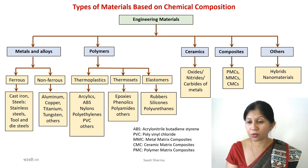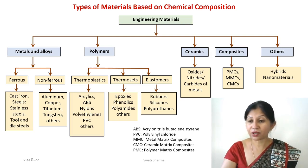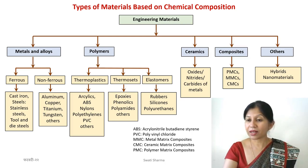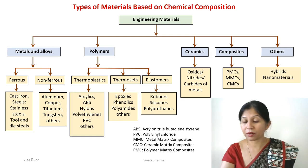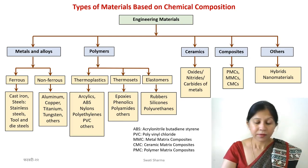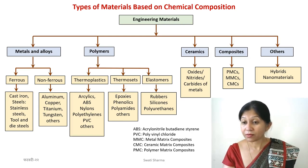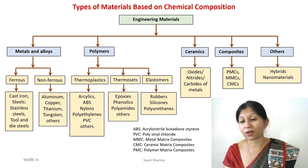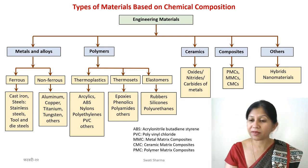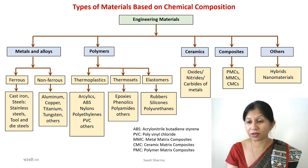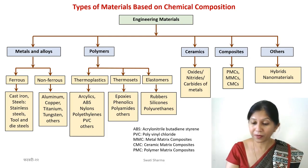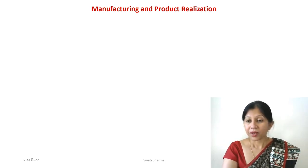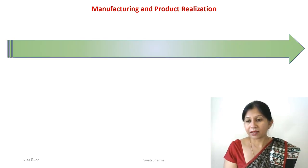Our primary focus in this course is manufacturing, so while I've given examples of hybrids and composites to make the classification complete, engineering materials we will focus on are mainly metals, alloys, and polymers — for example, plastic extrusion and related polymer processing.